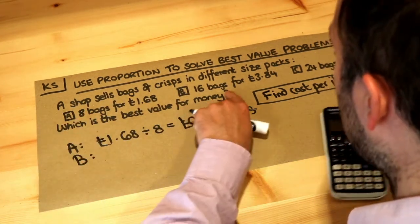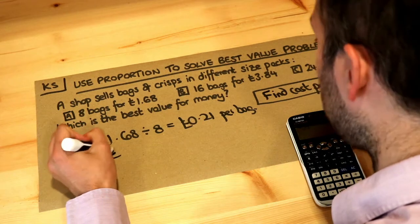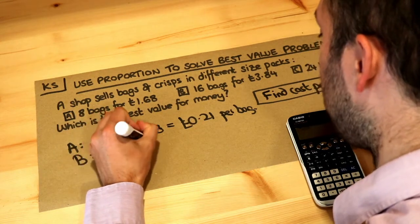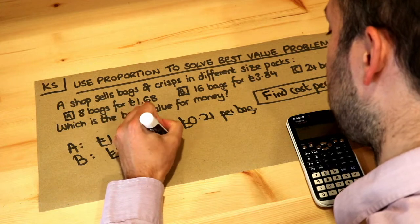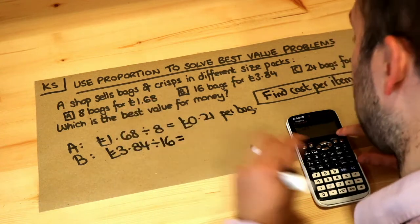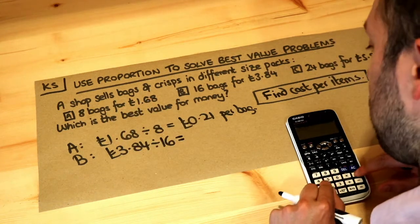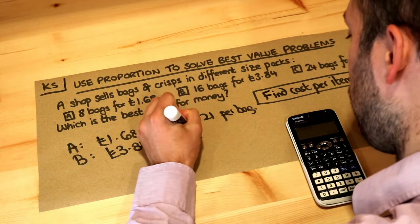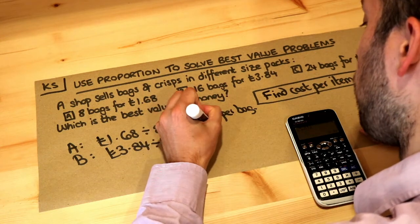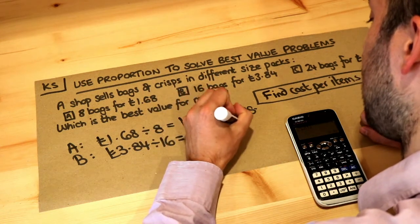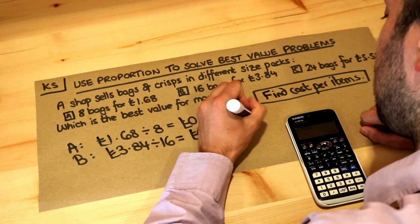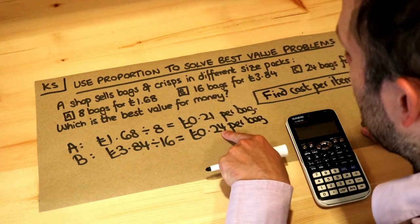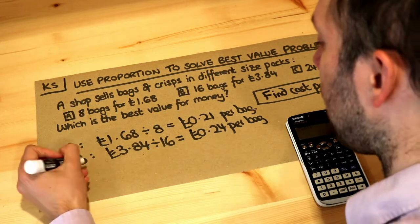What about option B? 16 bags for £3.84. To find just 1 bag, we divide the total amount into 16 equal parts to find the cost of each bag. £3.84 divided by 16 is 0.24, so that's 24p per bag. We can see this is a slightly worse deal because you're paying more per bag than in option A.